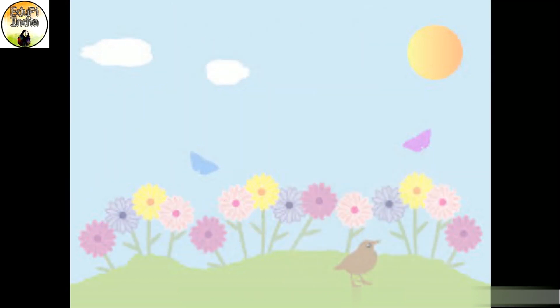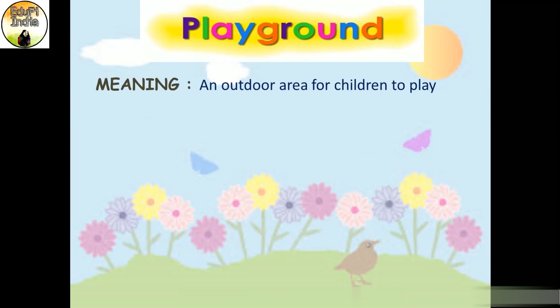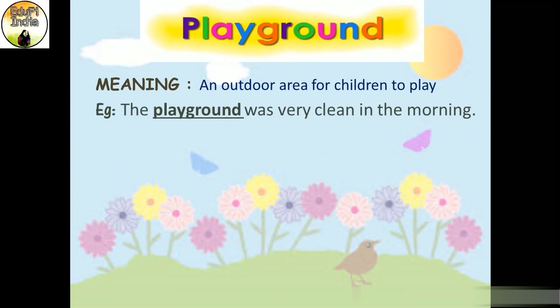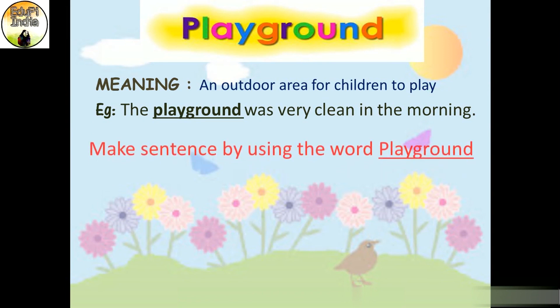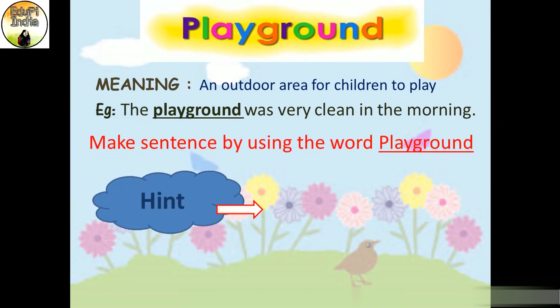The next word is 'playground.' The meaning of playground is an outdoor area for children to play. For example, the playground was very clean in the morning. I know students, you really miss going to the playground these days, but we have to stay inside because we are more safe inside our houses. Can you make a sentence using this word 'playground'?